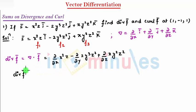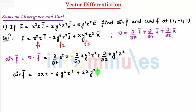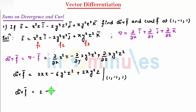So div of f̄ is given by: with respect to x I get 2xz, minus with respect to y I get 6y²z², and with respect to z I get plus 2xy²z. I need to find this at (1, -1, 1). Substituting: div of f̄ = 2(1)(1) minus 6(1)(1) plus 2(1)(1)(1) = 2 minus 6 plus 2 = minus 2. So divergence of f̄ is minus 2.